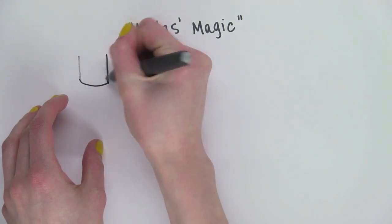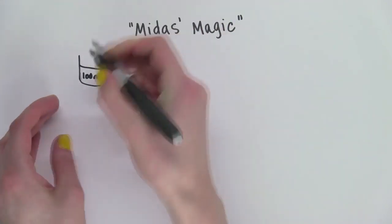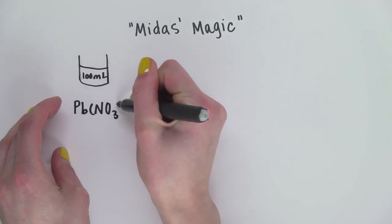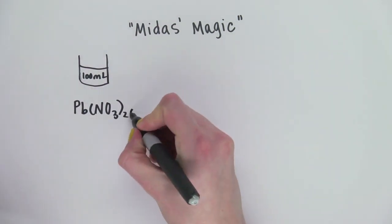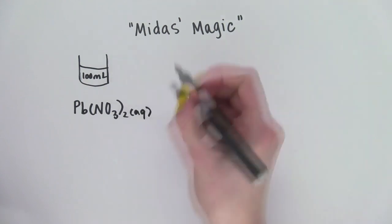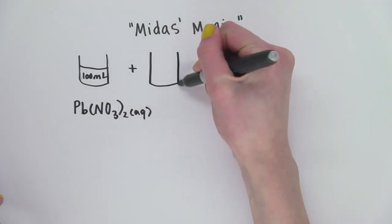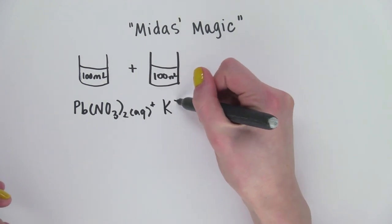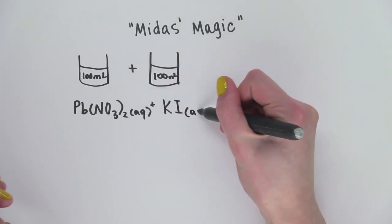He had about 100 milliliters of lead nitrate. And that's aqueous. It's in solution. And about 100 milliliters of potassium iodide, also aqueous.